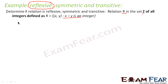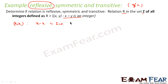We will try with reflexive first. For reflexive, (a, a) should be there — it is your own mirror reflection. That means (x, x) should exist. (x, x) means x minus x is an integer. x minus x is nothing but 0, and 0 is an integer. Since 0 is an integer, for any value of x, x minus x is an integer, so we can say that this relation is reflexive.